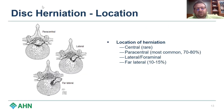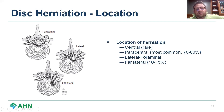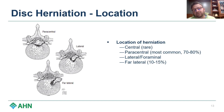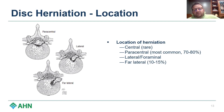Let's talk about disc herniations and their locations. True central discs, which come directly out of the center of the posterior aspect of the disc, are actually quite rare. The most common type is the paracentral disc herniation, because the posterior longitudinal ligament reinforces the nucleus centrally, but as you work out laterally you get less reinforcement, so the disc finds the path of least resistance and herniates paracentrally.